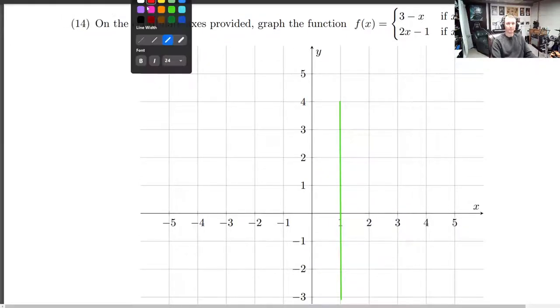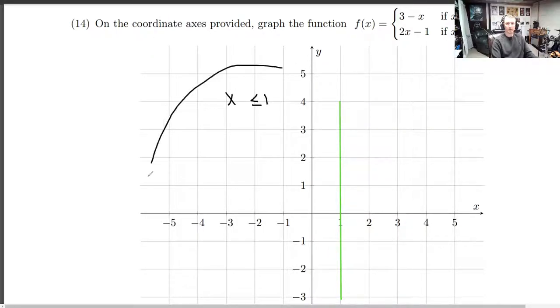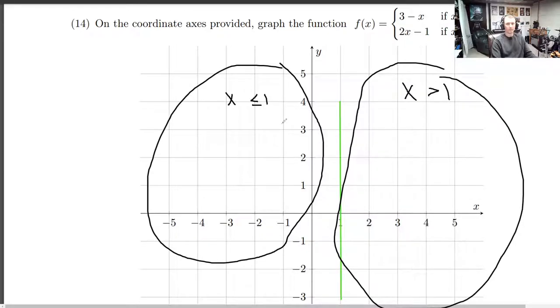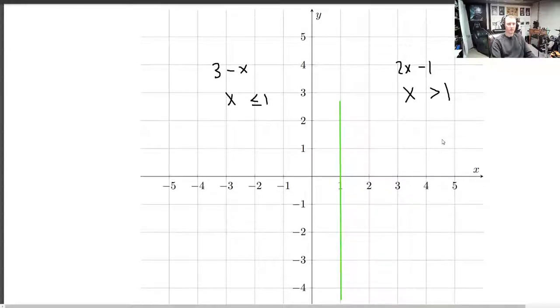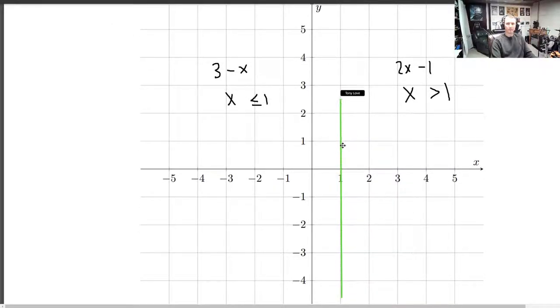For anything on the left of it, x is less than or equal to 1 over here. Anything on the right of it, we've got that x is bigger than 1. So we're going to have a graph over here. It's going to stop at this green line, and then it's going to pick up over here on the right side with a different graph. So I'll keep these labels here for us. 3 minus x is on this left side, and on the right side we've got 2x minus 1.